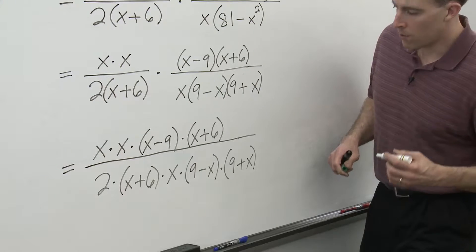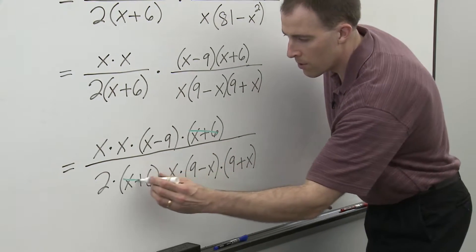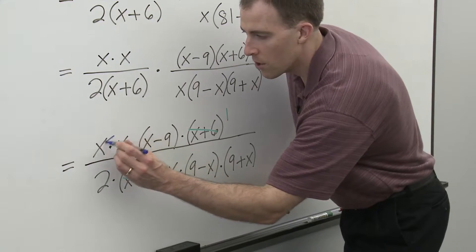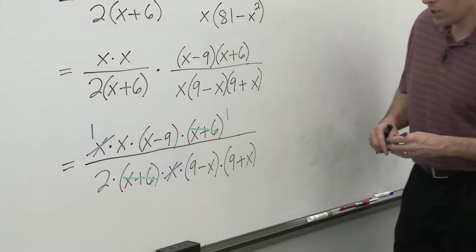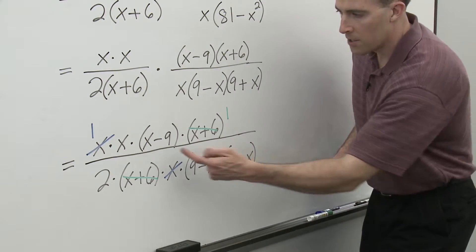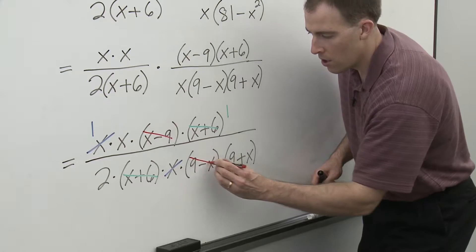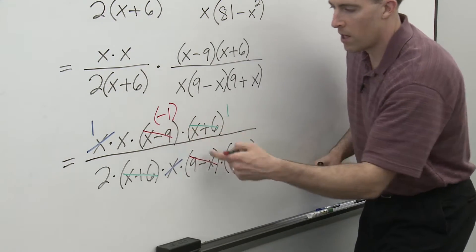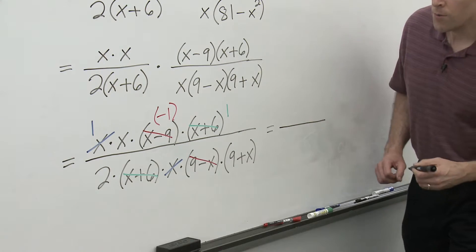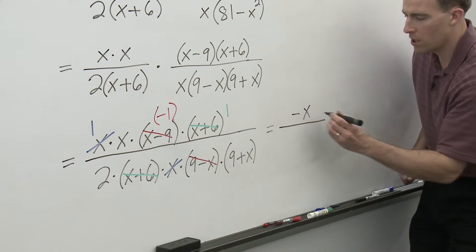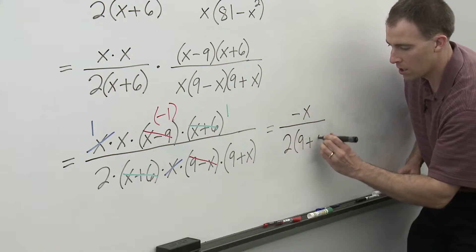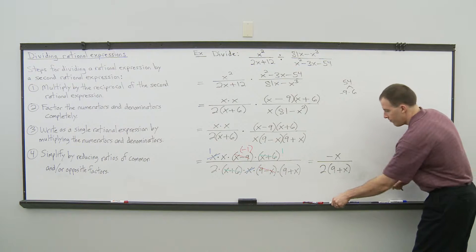The final step is to simplify by reducing ratios of common and/or opposite factors. I see an x plus 6 that we can reduce — those divide to 1. One of the x's reduces with another x, also giving 1. Now looking for opposite factors: I see x minus 9 and 9 minus x, which are opposite factors. Opposite factors always reduce to negative 1. In the numerator we have x times negative 1, which gives negative x, and in the denominator we have 2 multiplied by 9 plus x.